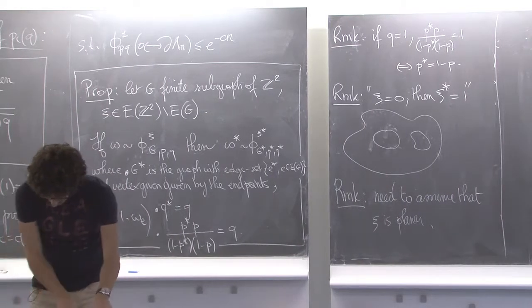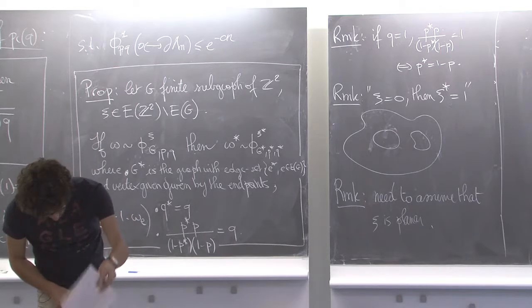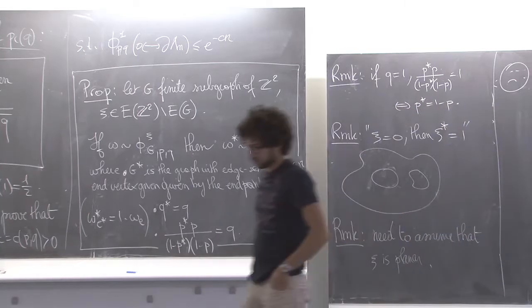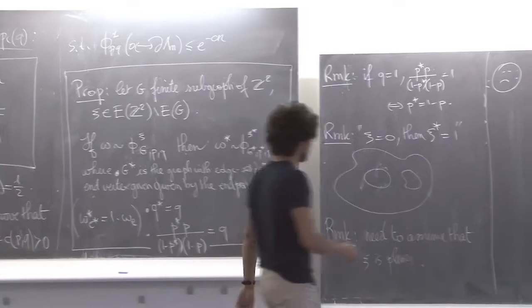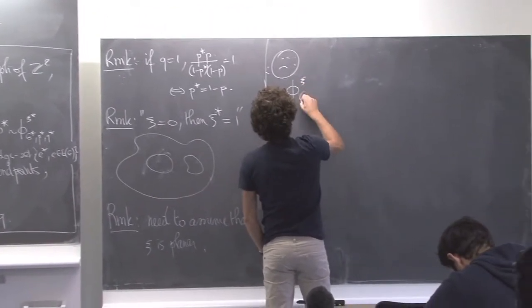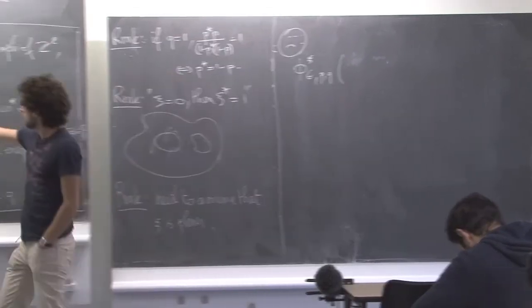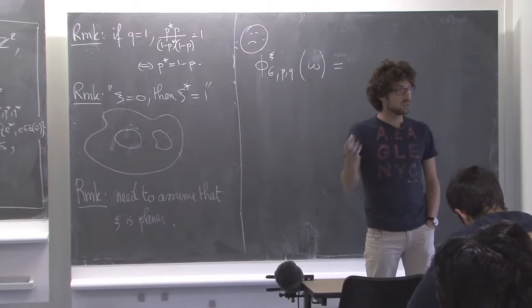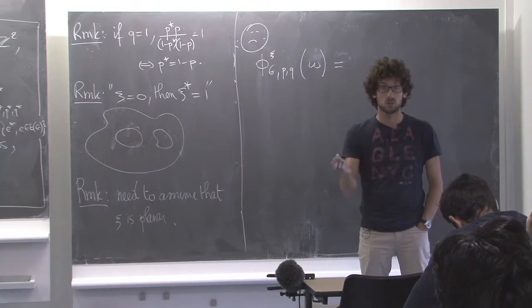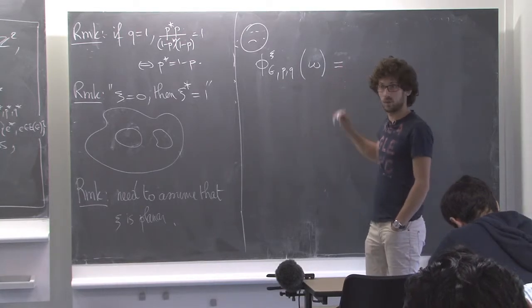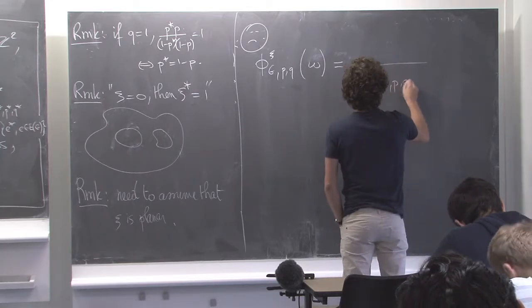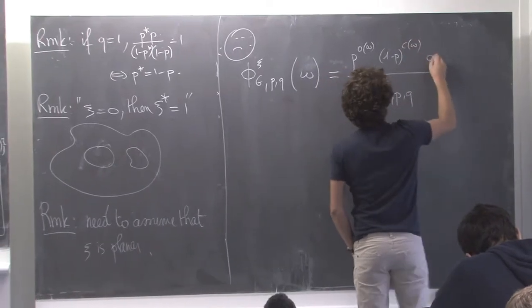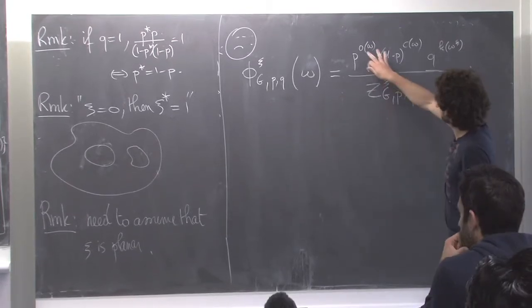Let's prove the duality claim. We need to compute, by definition, this quantity in terms of omega*. Since omega and omega* are in bijection, I want to write the partition function — p to the number of open edges, (1-p) to the number of closed edges, q to the number of clusters of omega_psi — in terms of omega*. The first thing: I can include (1-p)^|E| as a constant c, and look at (p/(1-p)) to the number of open edges, times q to the number of clusters.